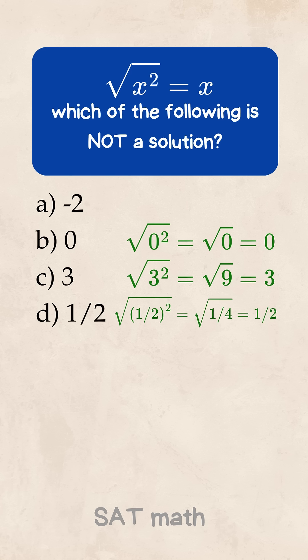x equals 1 half. Square root of 0.25 is 0.5. No problem. But x equals negative 2? Square root of negative 2 squared is square root of 4. That's 2, not negative 2. So the equation doesn't work for negative numbers.